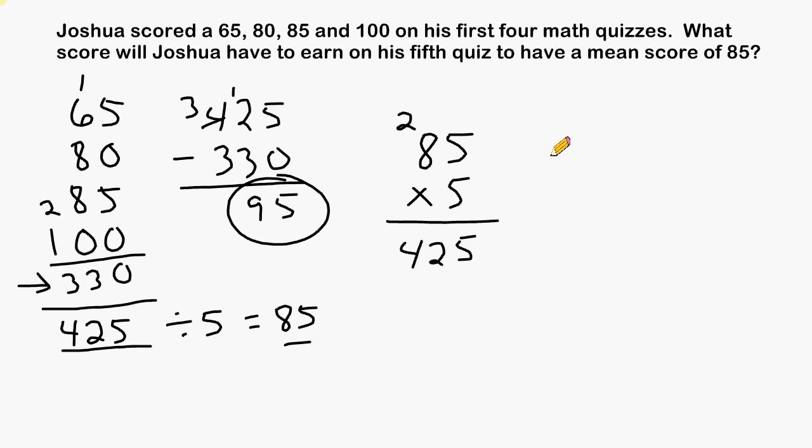So when solving a problem when given the mean and you have to find the missing score, simply take the mean, multiply it by the total number of scores that you will have in the end, in this case it was 5, to find out what the total of all five scores will be. And then what you do is you add up all of the previous scores and take that total and subtract it from what the total will be after the next score. And that difference will be the missing score.